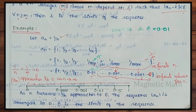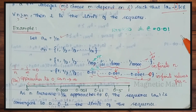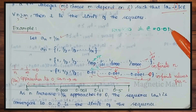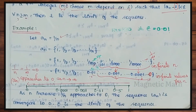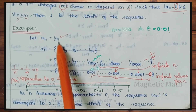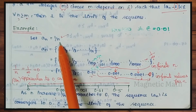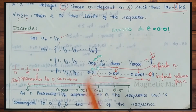So 0 is the limit of the sequence. L is the limit, and the final value is 0. Therefore 0 is the limit of the sequence. The sequence an equals 1 by n converges to 0, and 0 is the limit of the sequence.